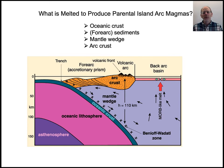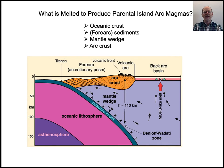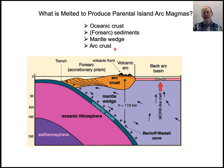Just wanted to catch up on some of the lecture materials for Tuesday, March 16th. Where we left off was the question of what is melted to produce parental island arc magmas. There can be multiple materials: you could melt oceanic crust, sediments, mantle wedge, and the arc crust. Each of these contributes a different geochemical signature to the magmas that are produced.